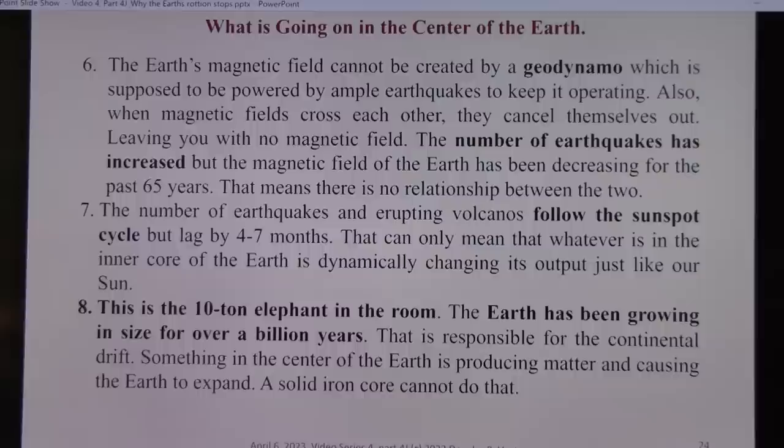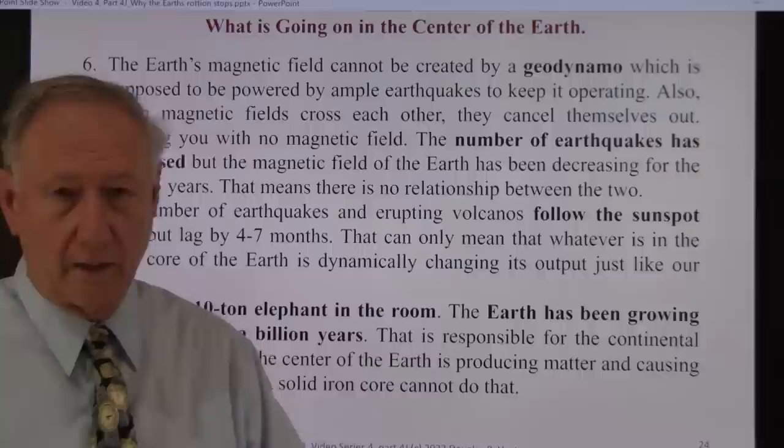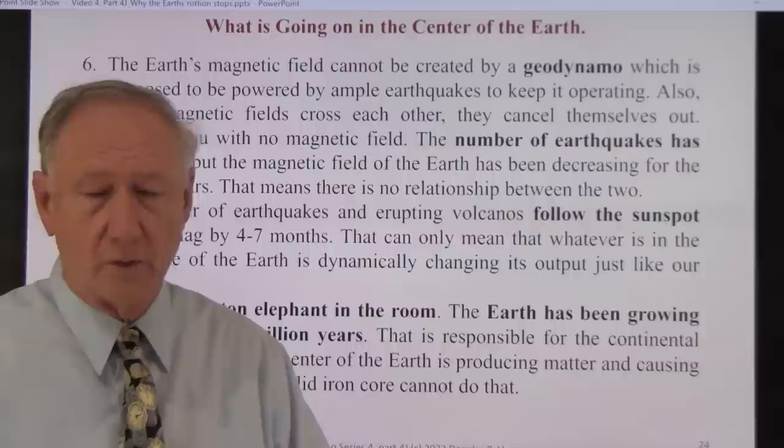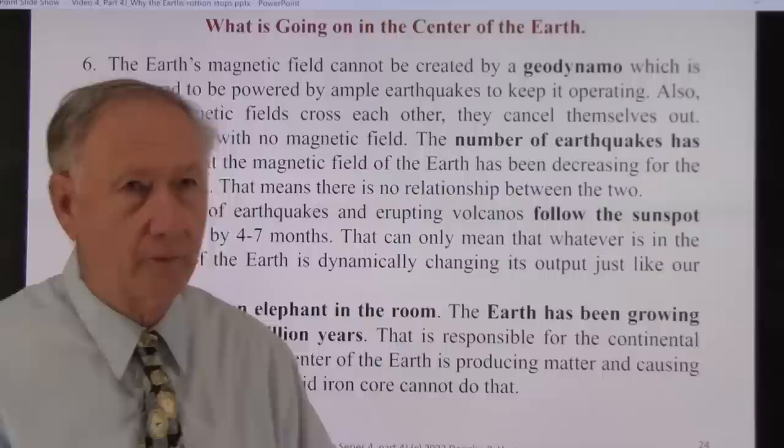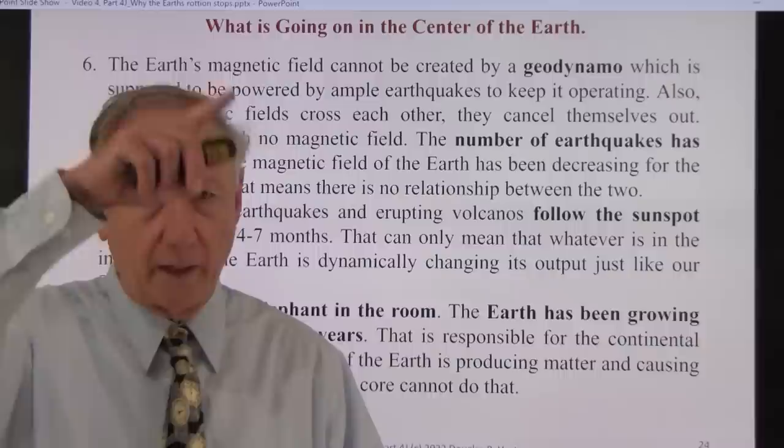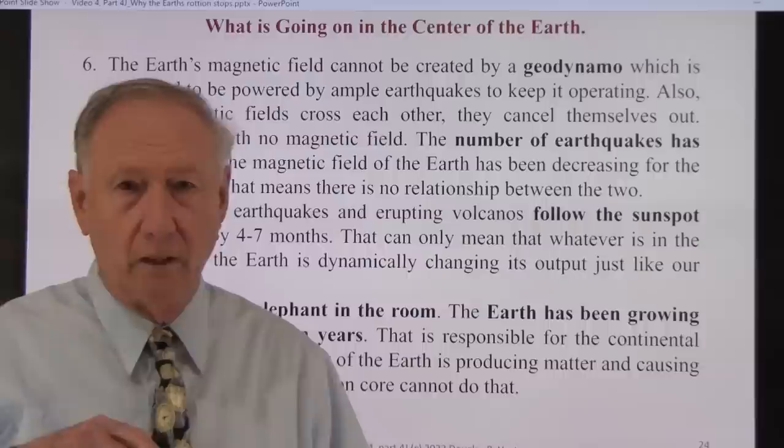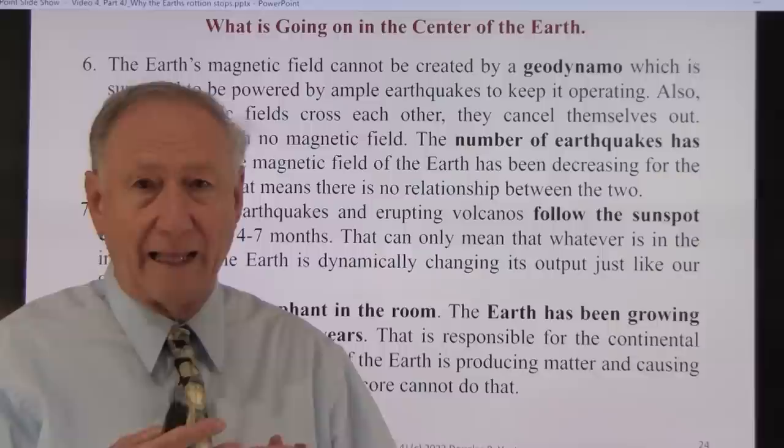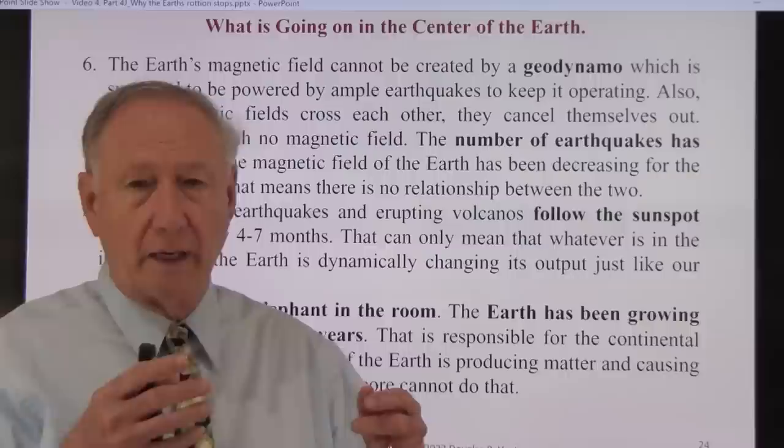Six, the Earth's magnetic field cannot be created by a geodynamo, which is supposed to be powered by an ample supply of earthquakes to keep it operating. One of the scientists that were involved with the early studies, in the 70s, early 70s, was Professor Busi from UCLA. I met him. I lived in West LA, and I spoke to him. He actually gave me some of his tear sheets from the journals, and I have them at home. And I told him, how can you have these, basically they draw columns of magma going up and down, and supposedly this magma produces an electrostatic field. But when you have multiple columns of magma going up and down, their magnetic fields are going to cross each other. When you have two magnetic fields crossing each other, they cancel each other out, and you won't have a magnetic field.